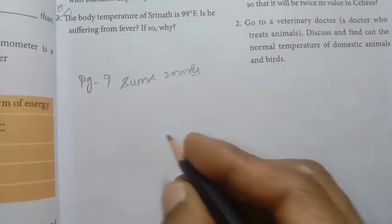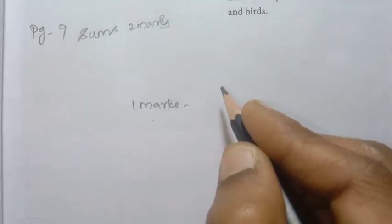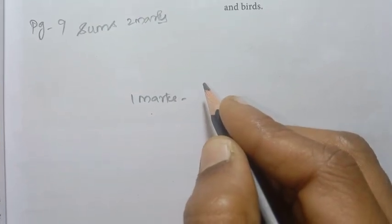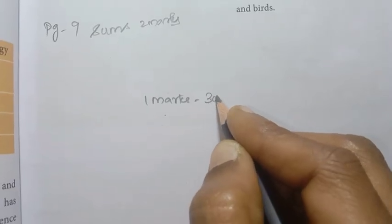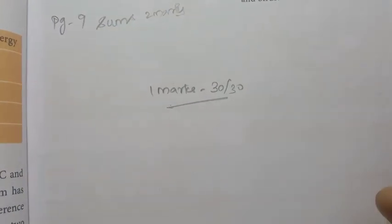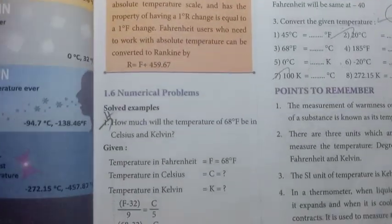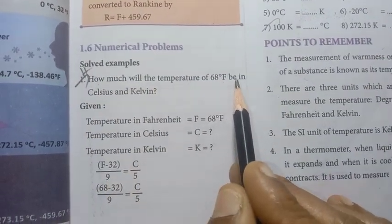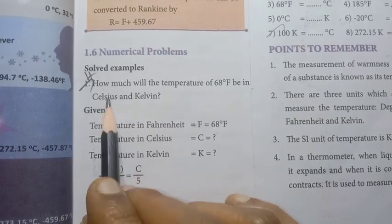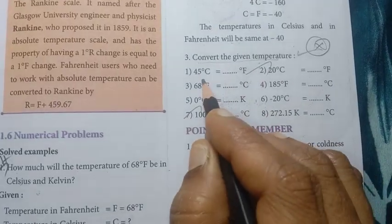Looking at the first section, 1-mark questions are worth 30 marks — scoring 30 out of 30 is important. Page No. 9: How much will the temperature of 68 degrees Fahrenheit be in Celsius and Kelvin? This problem will be asked. The converter gives temperature in Celsius and Fahrenheit.